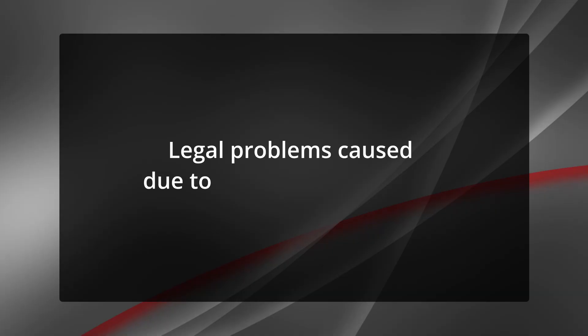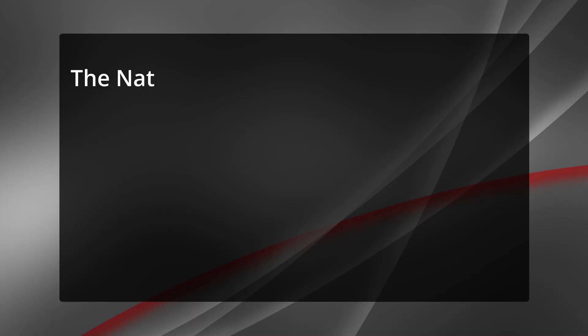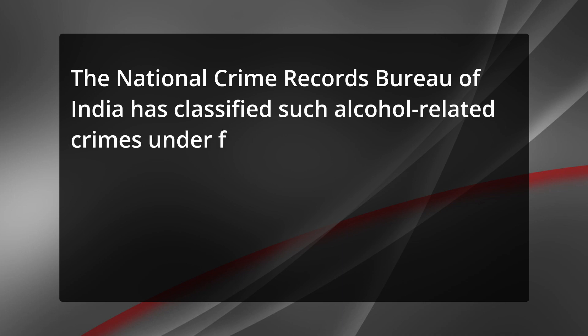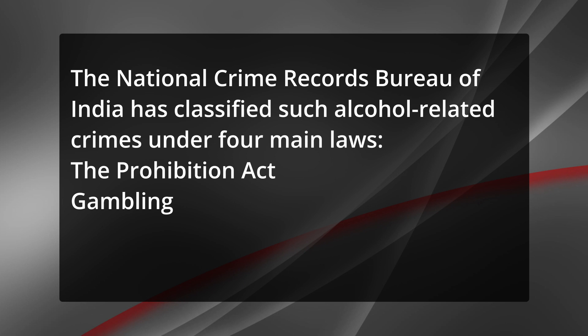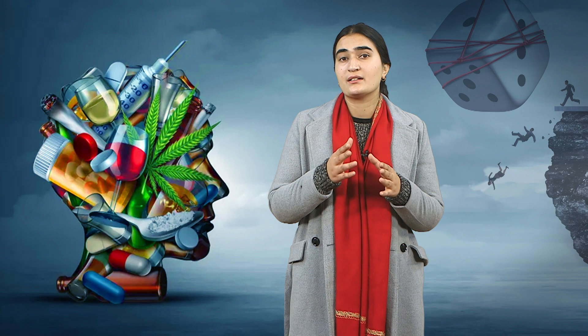Coming to legal problems caused due to alcohol consumption. Legal issues are another major consequence of alcohol abuse. Offences such as sexual or physical assault, rape, exploitation of women in the sex industry and murder are all related to intoxication. The National Crime Records Bureau of India has classified such alcohol-related crimes under four main laws: the Prohibition Act, Gambling Act, Psychotropic Substance Act and Excise Act. Unfortunately, the majority of these crimes are considered minor and are often disregarded, preventing them from receiving the recognition they deserve.